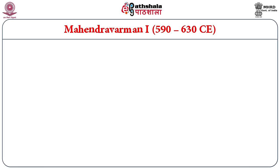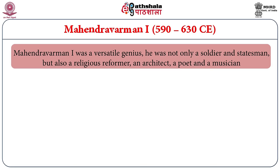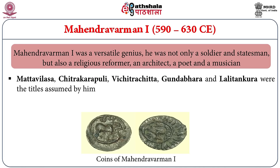Simha Vishnu was succeeded by Mahendra Varman I, who ruled between 590 to 630 AD. He was the greatest ruler and a versatile genius — not only a soldier and statesman, but also a religious reformer, an architect, a poet, and a musician. He assumed several titles like Mathavilasa, Chitra Karapoli, Vichitra Chitra, Gunabadra, and Lalitakura, all reflecting the many qualities of this king.